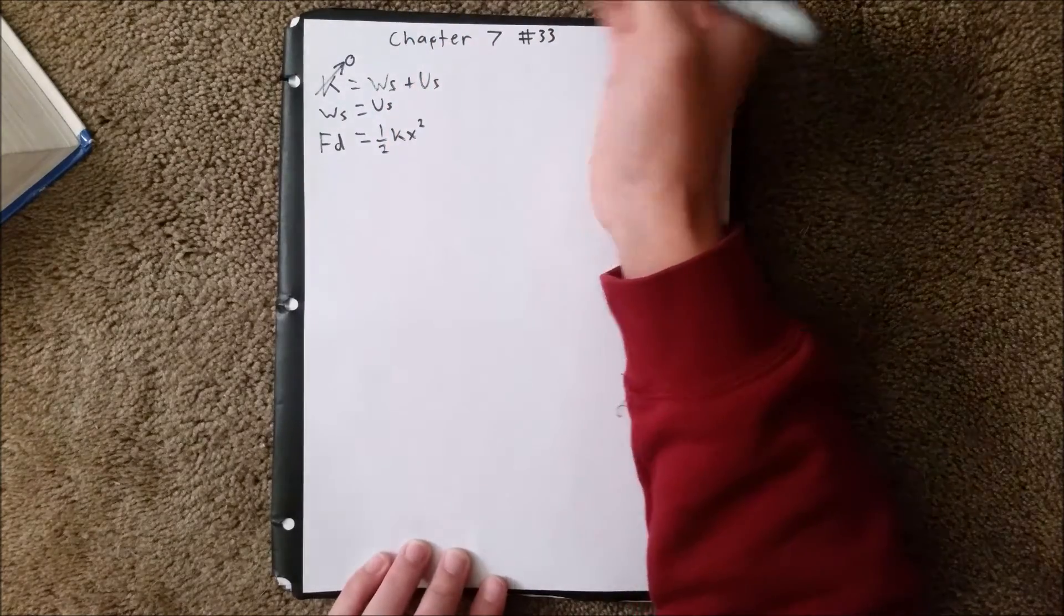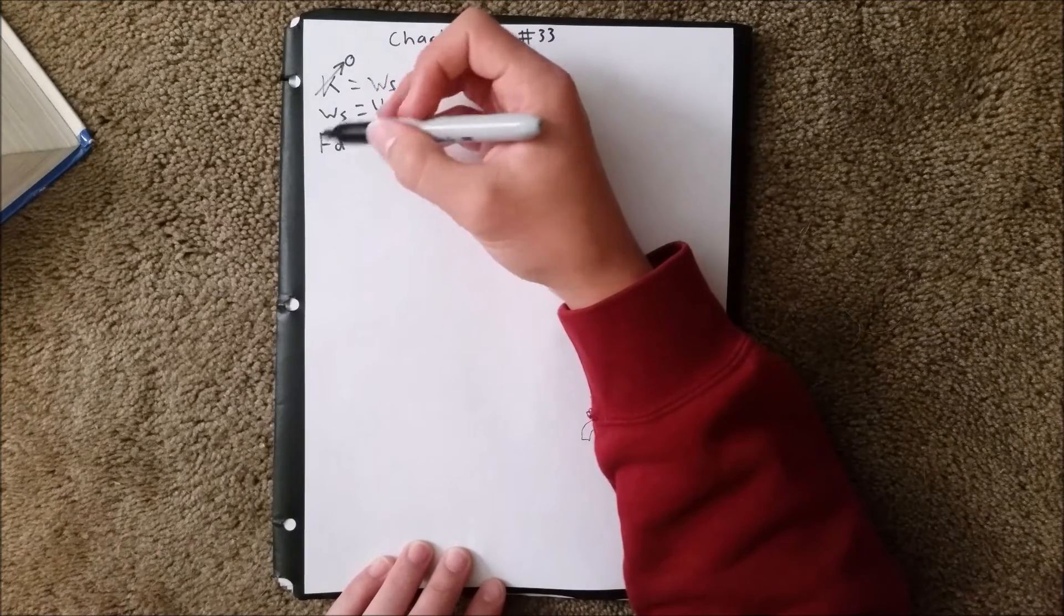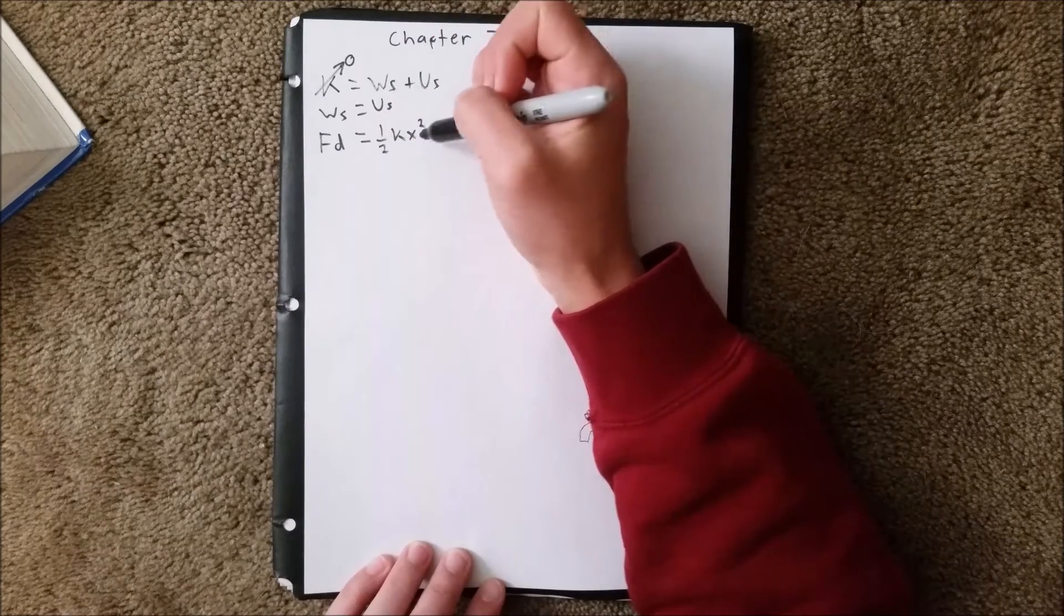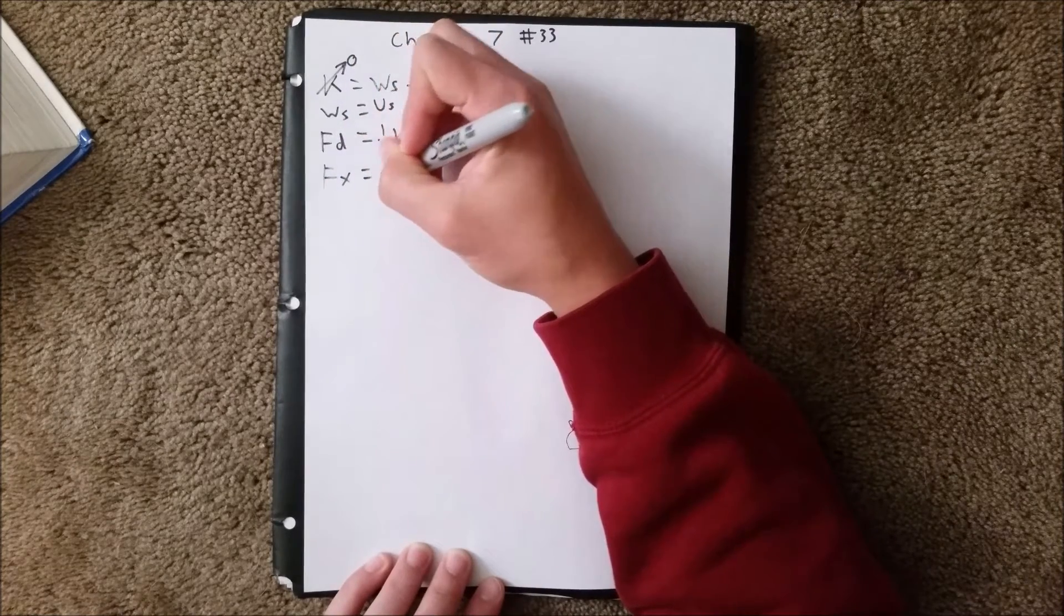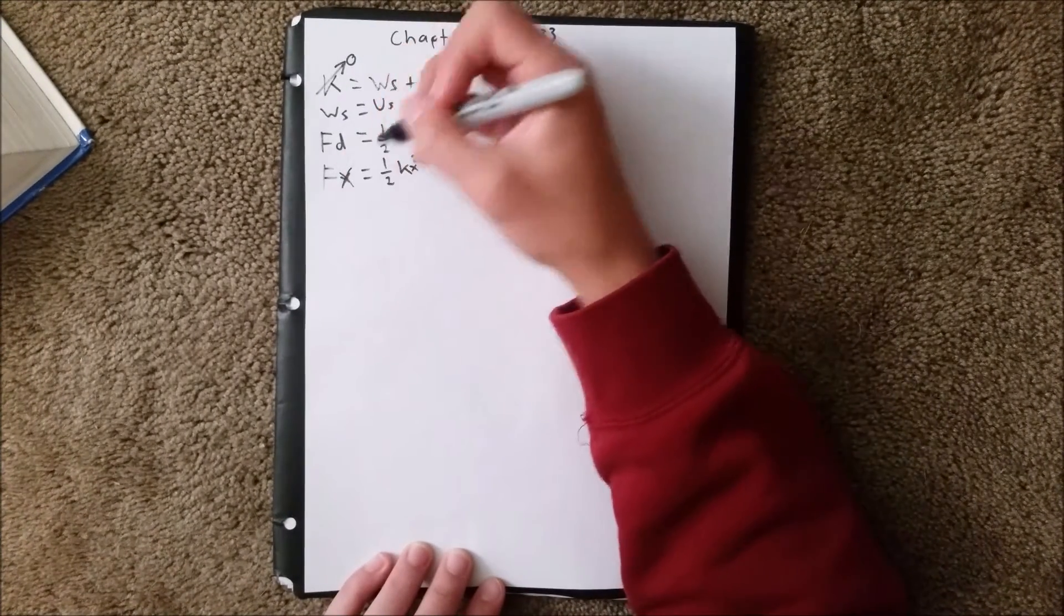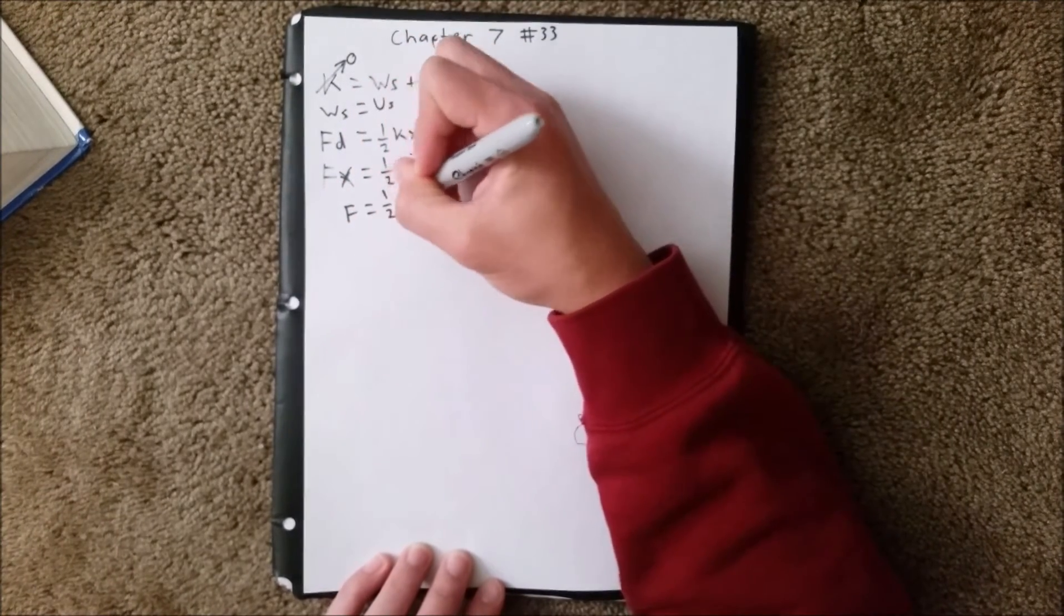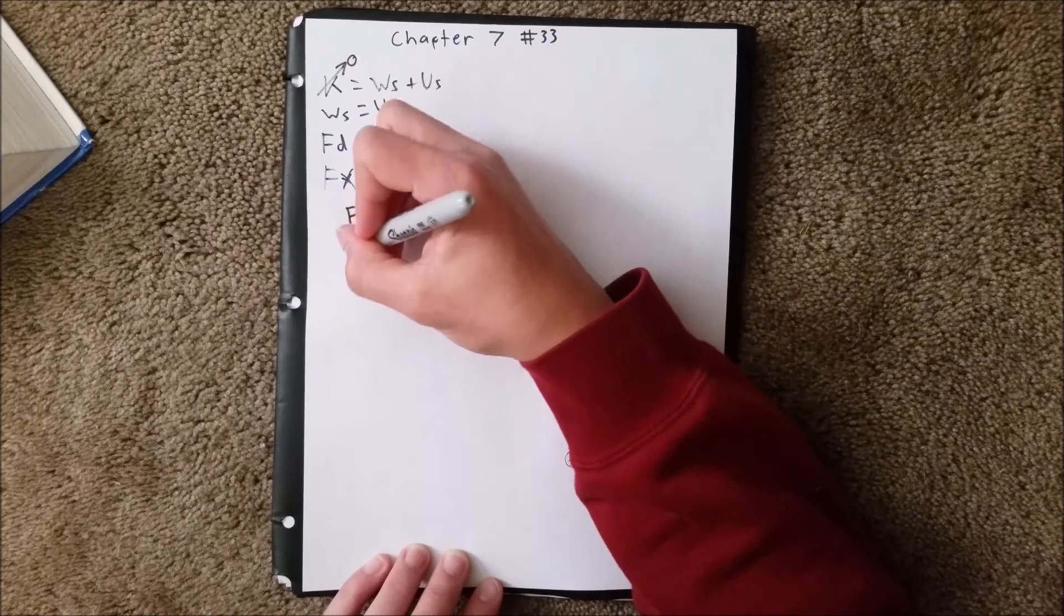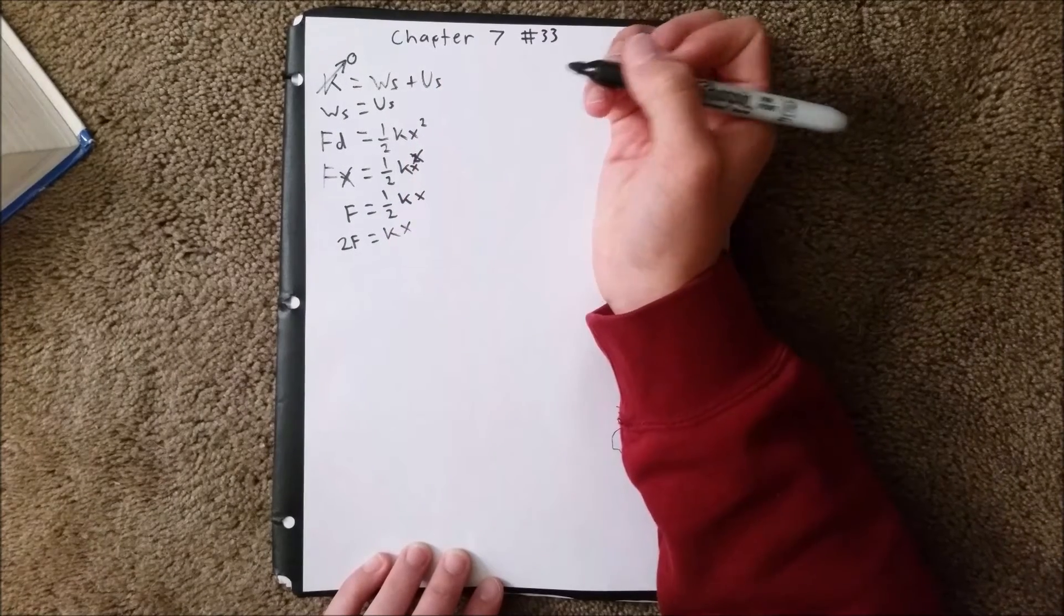In this case, the distance is going to be equal to x, since the distance that it displaces is the same as x. So I'm going to rewrite this as force times x equals 1 half kx squared. We have an x on both sides, so we can cross out these x's, which means force equals 1 half kx. We can multiply by 2 on both sides, which will give us 2f equals kx.